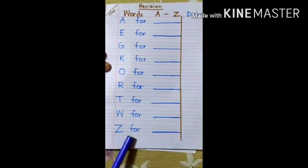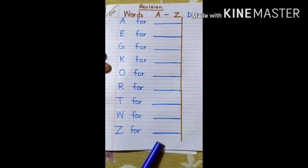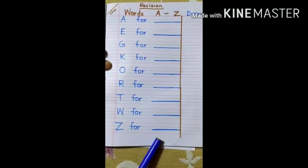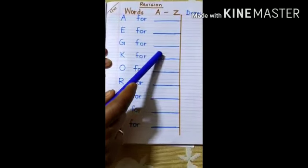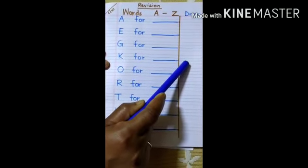Z for zip. Z I P, zip. So children, you have to say and write the words as well as draw the pictures and color it.